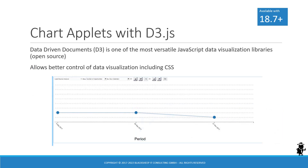If you work with chart applets — a feature that has existed in Siebel for a long time — in Siebel version 18.7 Oracle changed the browser-side rendering engine to data-driven documents, or D3, one of the most established and versatile free JavaScript data visualization libraries available. Oracle chose D3 to allow their own developers and custom developers to better control data visualization capabilities of chart applets, enabling impressive custom charts.